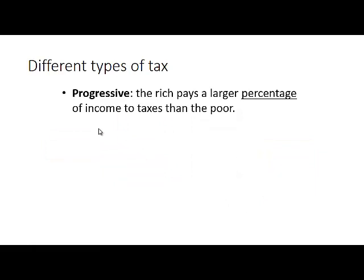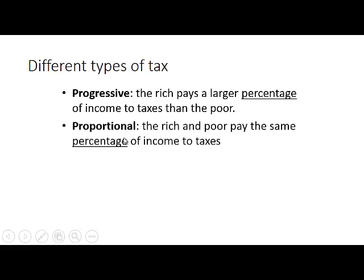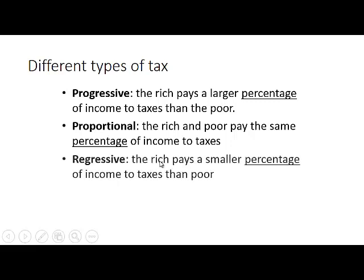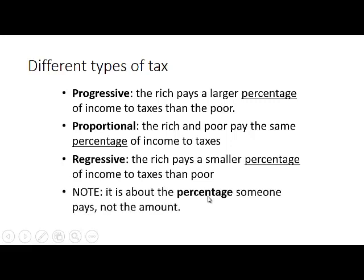A different way to classify tax is to look at progressive tax, where the rich pay a larger percentage of income to taxes than the poor; proportional tax, where the rich and poor pay the same percentage of income to taxes; and regressive tax, where the rich pay a smaller percentage of their income to that particular type of tax than poor people. It's important to note that it's about the percentage of income, not the amount paid, that determines whether a tax is progressive, proportional, or regressive.